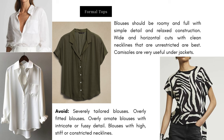Bold color, irregular shape, but lines are rounded and not very sharp. In the white shirts I love the length but also the ease of the neckline — nothing too sharp, geometric, or constricting. You want to avoid severely tailored blouses, overly fitted blouses, overly ornate blouses with intricate or fussy detail, or anything with high, stiff, or constricted necklines.